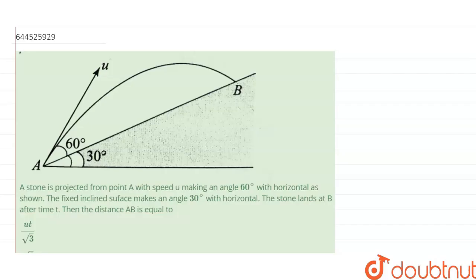So the question is: a stone is projected from point A with speed u making an angle 60 degrees with horizontal as shown. The fixed inclined surface makes an angle 30 degrees with horizontal. The stone lands at B after time t.